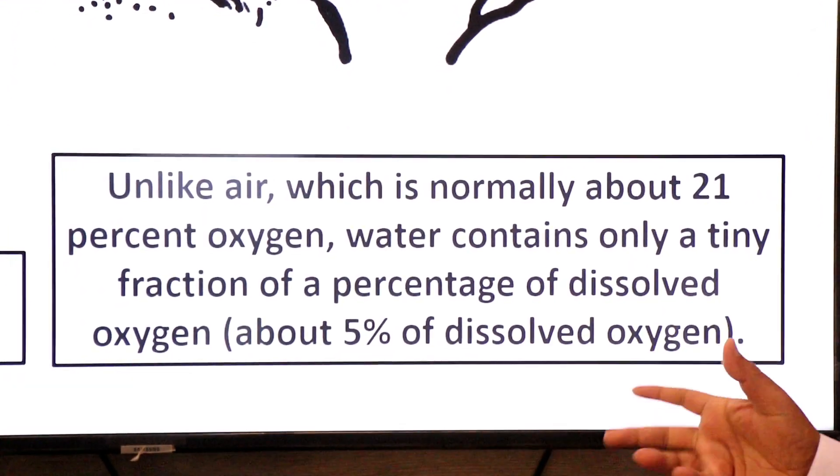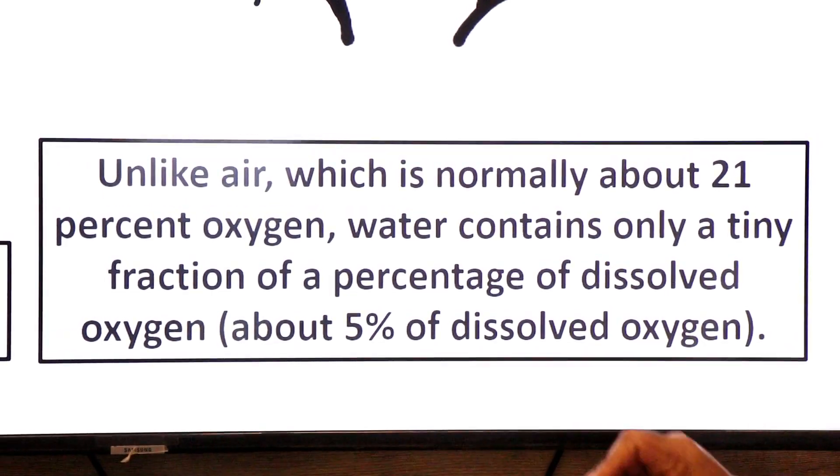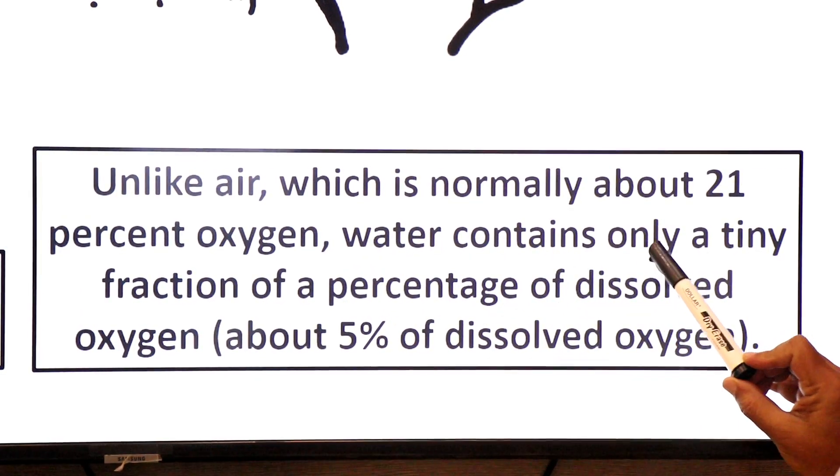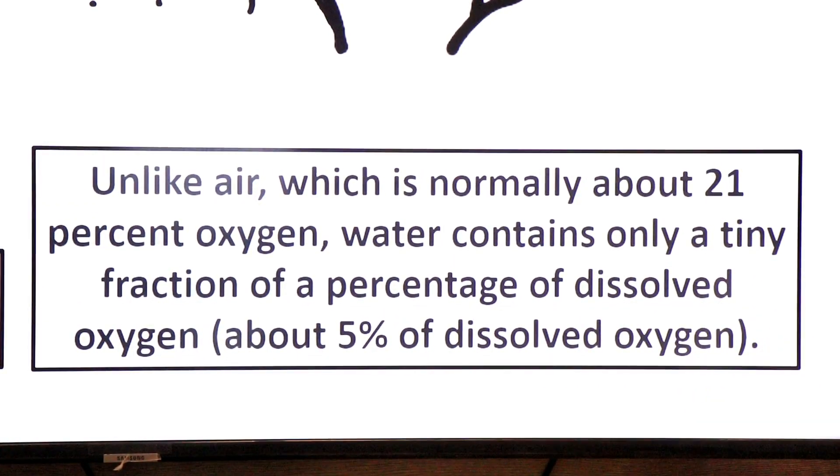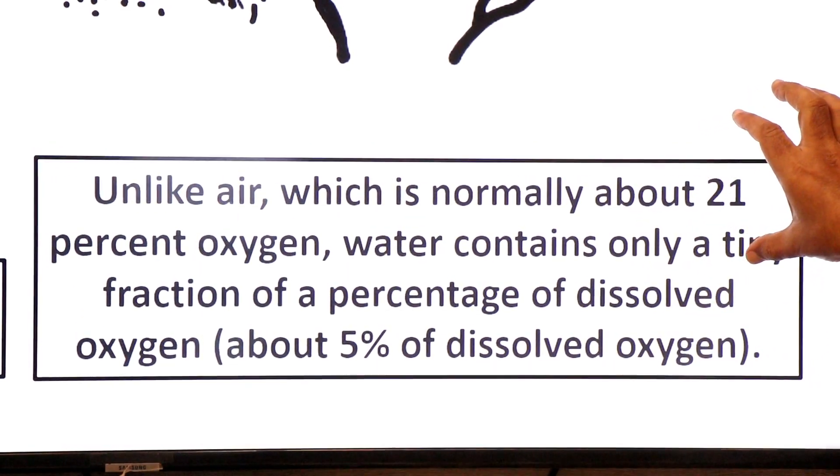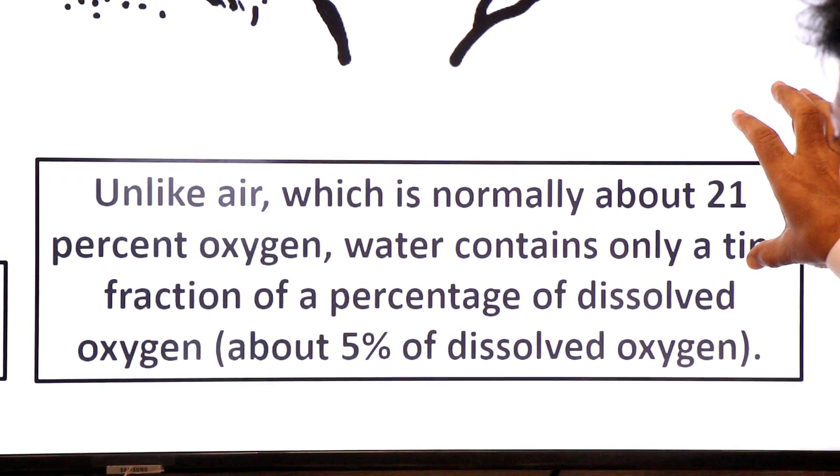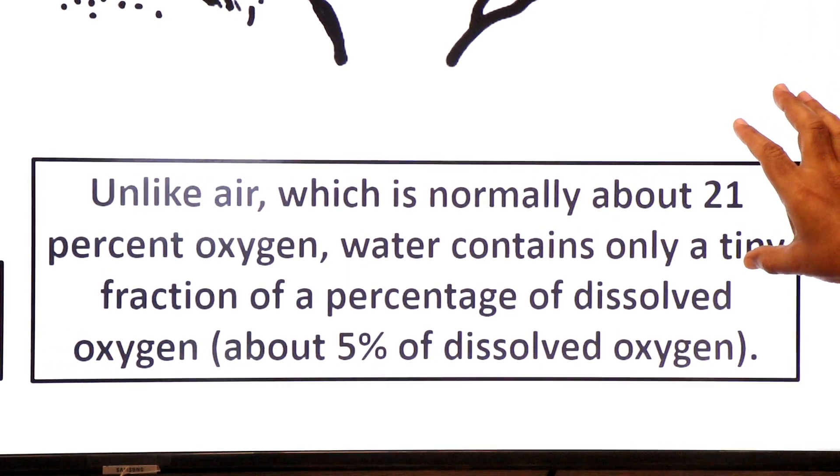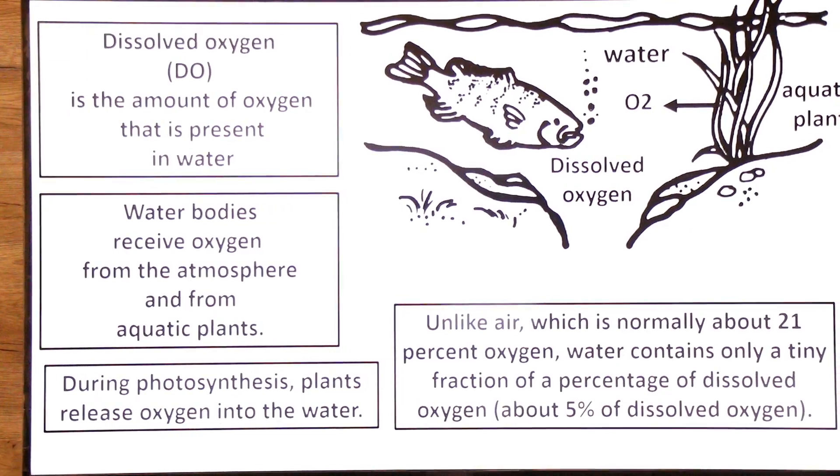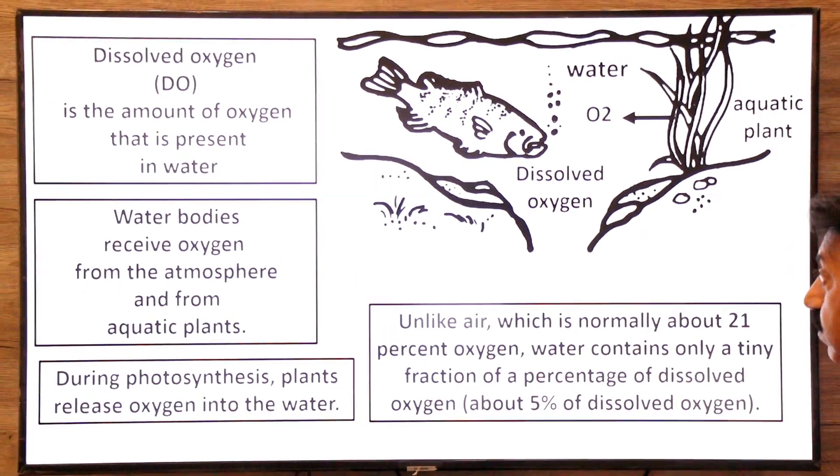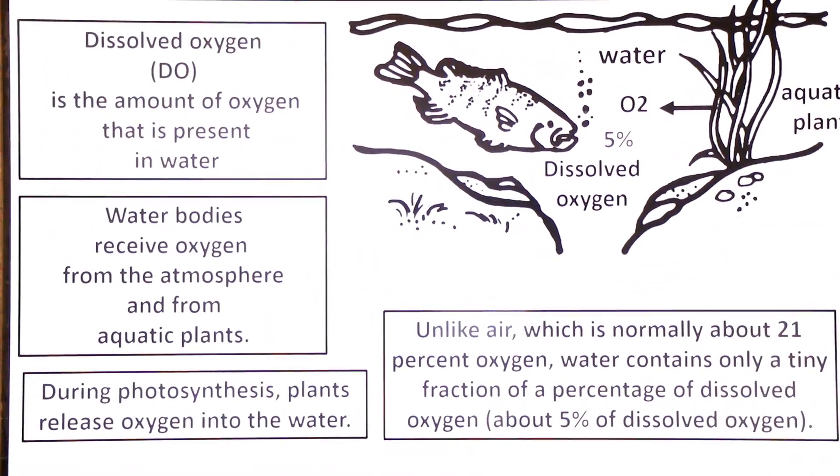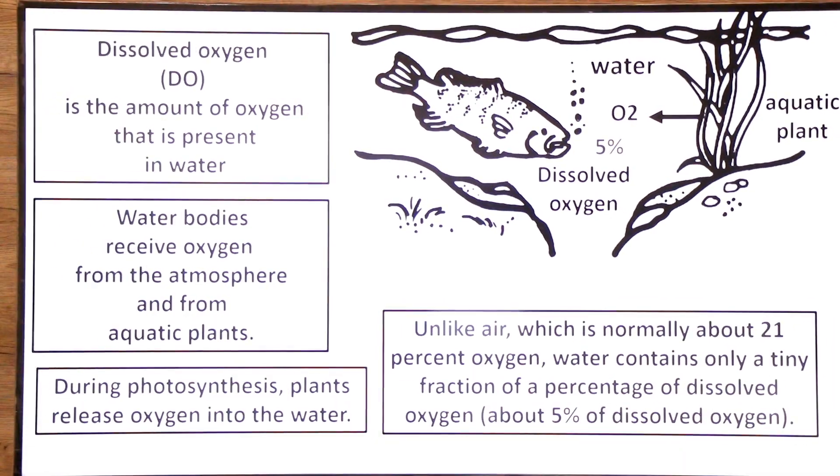Now let's see what is the percentage of dissolved oxygen. In air it's 21%. Unlike air, which is normally about 21% oxygen, water contains only a tiny fraction of a percentage of dissolved oxygen - only 5% dissolved oxygen. In air, the oxygen is free oxygen and is 21%. In water, the dissolved oxygen is only 5%. Please focus on the whole slide. So you see, there is 5% dissolved oxygen compared to air. Air has more - free oxygen is 21%.